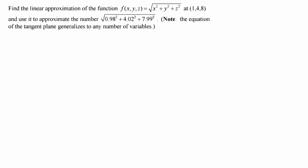Okay, we're going to find a linear approximation for a three input variable function, f of x, y, z equals the square root of x squared plus y squared plus z squared at the point 1, 4, 8.